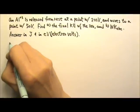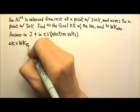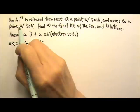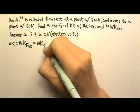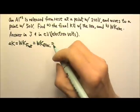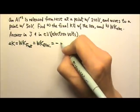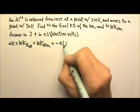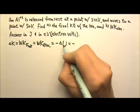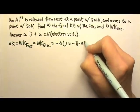We can use the work-energy theorem, which tells us the change in kinetic energy equals the work done by the net force. In this case, the only force acting on the ion is the electric force. The work done by the conservative electric force equals the negative change in potential energy — that's the definition of changing potential energy. So this equals negative delta U, and since U equals QV, delta U equals Q times delta V.